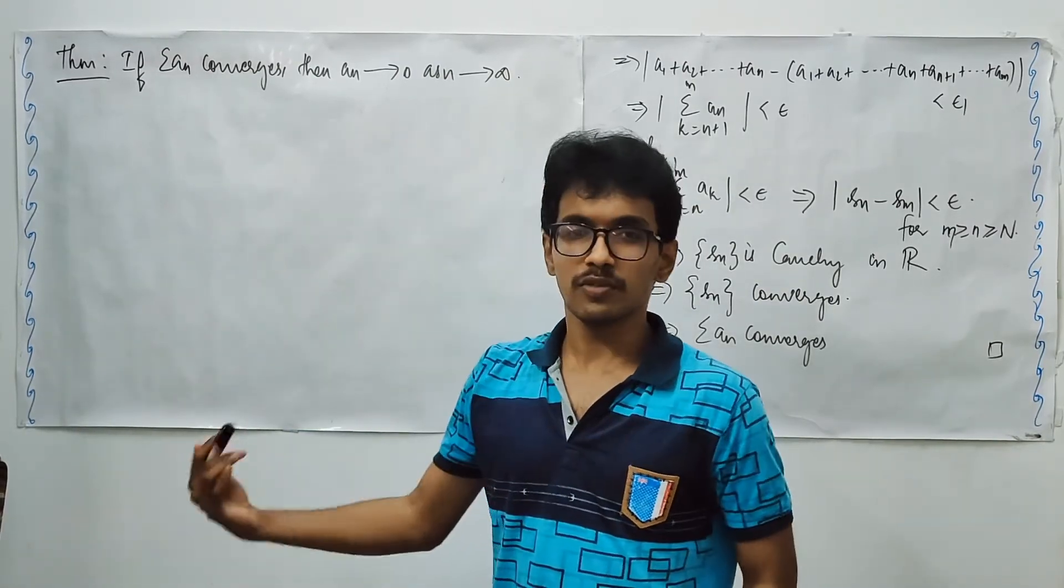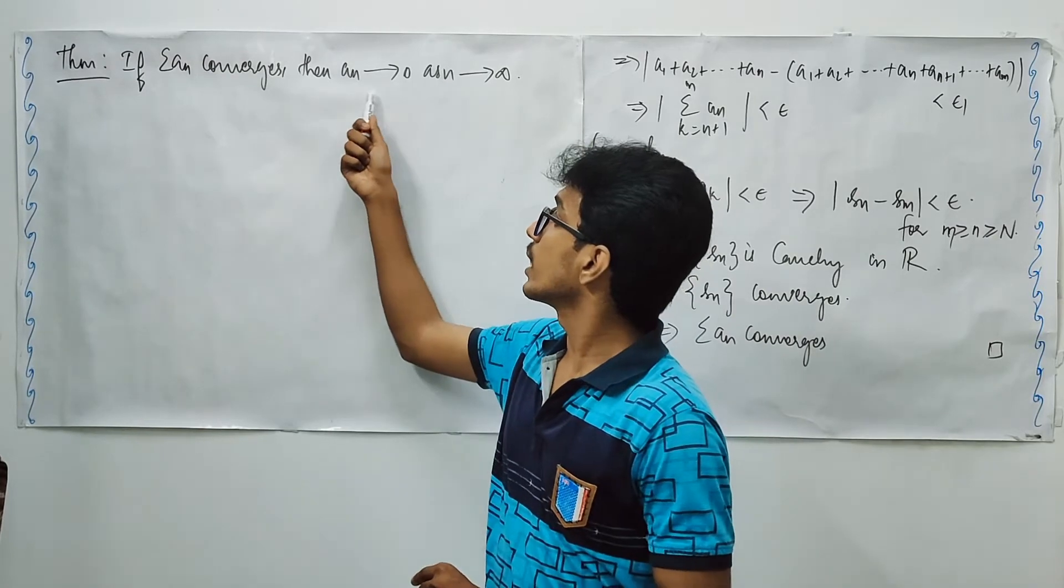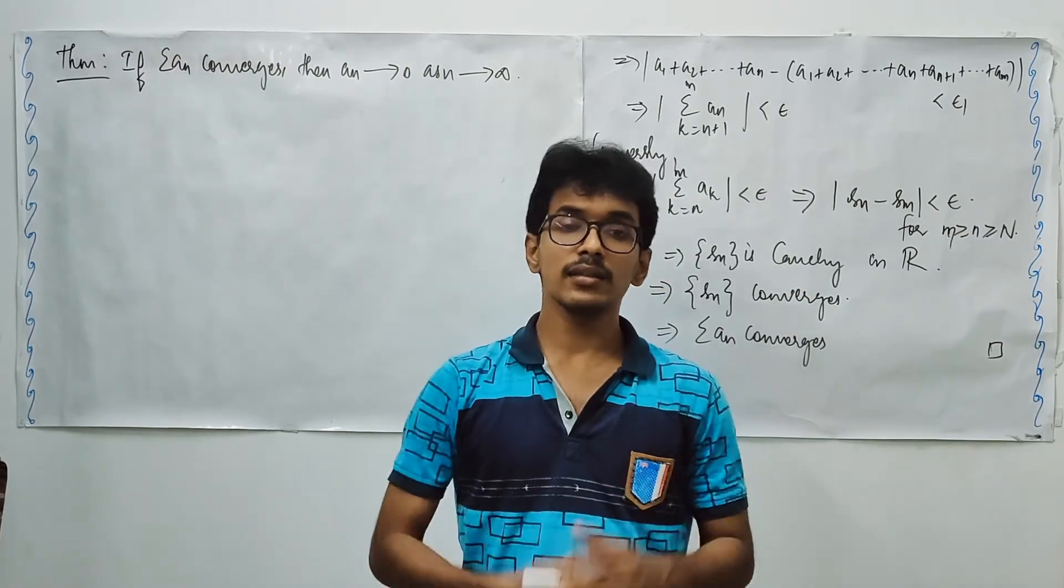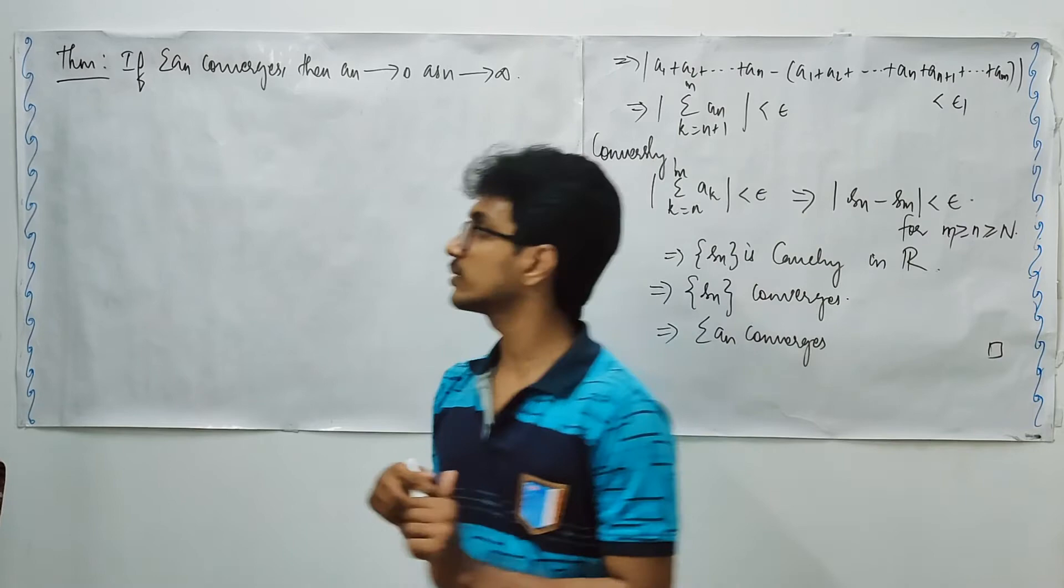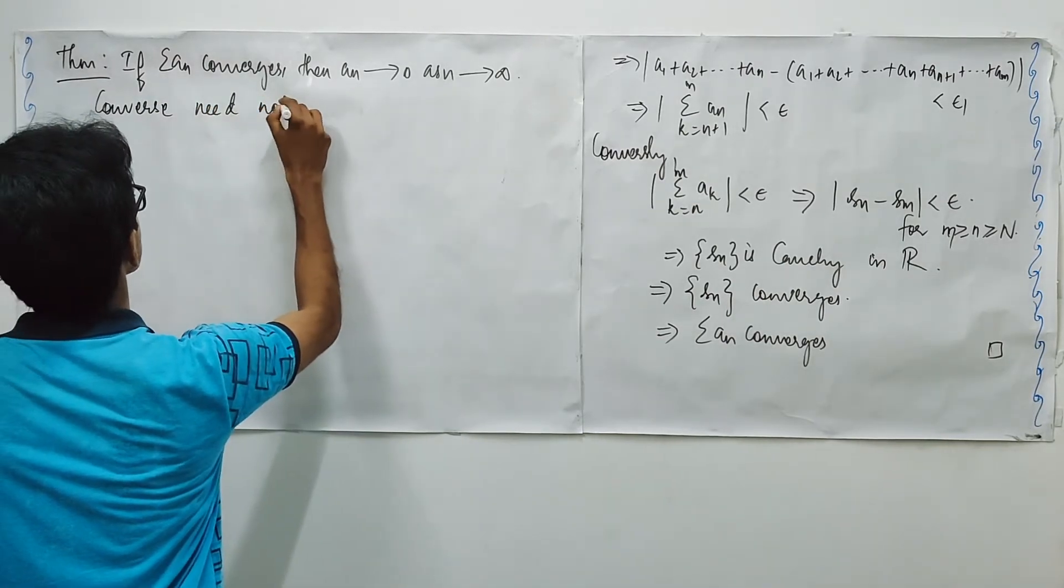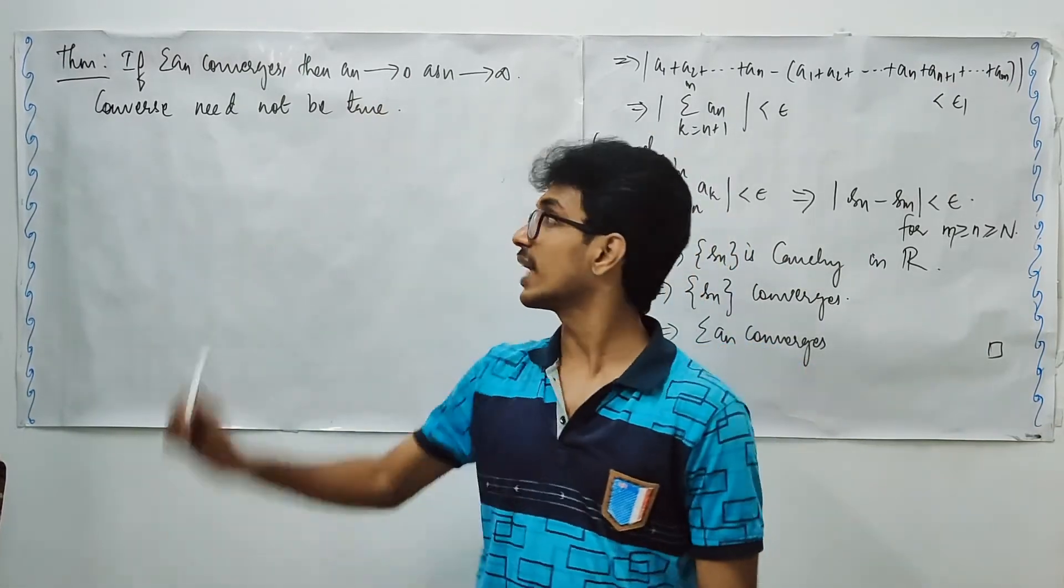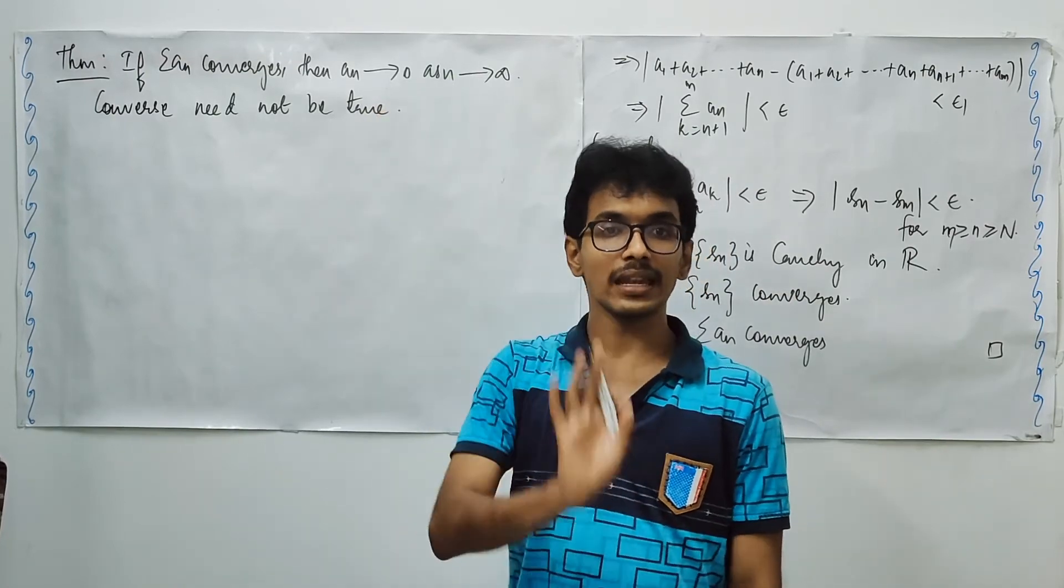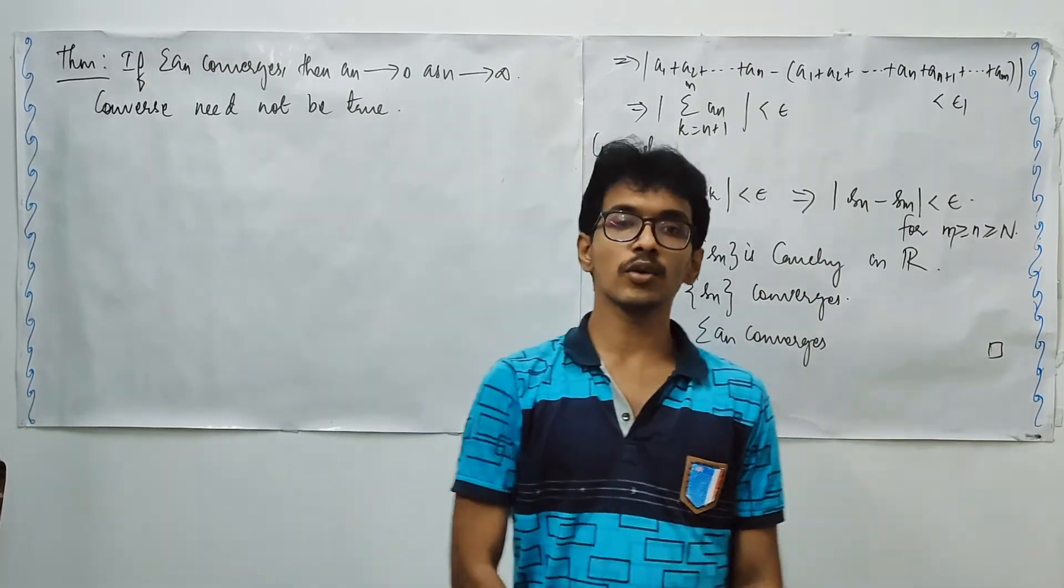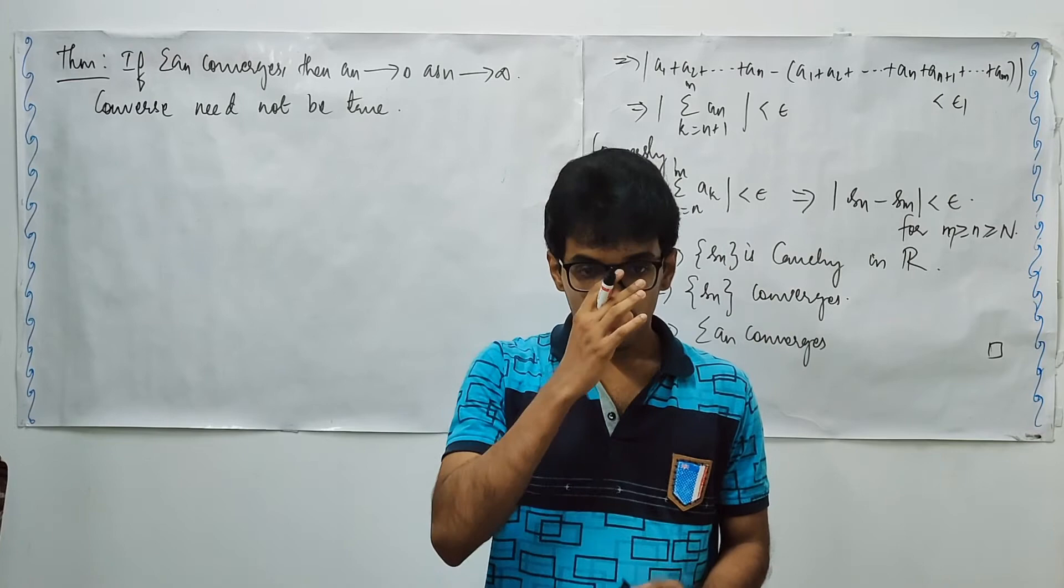I think I don't need to prove it formally. It can be easily seen. And does it imply whenever a_n approaches 0 as n approaches infinity, the series is convergent? No. The converse need not be true. And what way is this going to help us? If the nth entry does not tend to 0, we cannot say that the sequence can be convergent. Easily you can decide the sequence cannot be convergent at all.